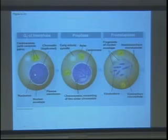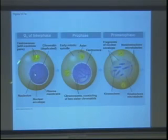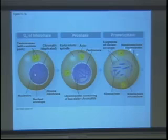In G2, the cell has replicated its DNA and is condensing it into chromosomes. The centrosomes, which have already duplicated, now march to opposite sides of the cell during prophase, and the chromosomes are condensed together. Then in prometaphase, the sister chromatid pairs get connected to the centrosomes by microtubules, while other microtubules go around and connect to each other.